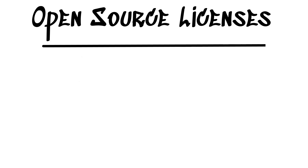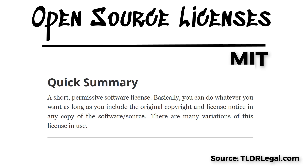First off, we're looking at the MIT license. The MIT license is one of the most liberal ones you can find. From the TLDR Legal definition, it is a short permissive software license. Basically, you can do whatever you want as long as you include the original copyright and license notice in any copy of the software source. There are many variations of this license in use, but that description pretty much sums it up.